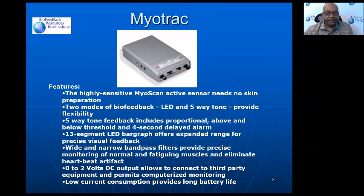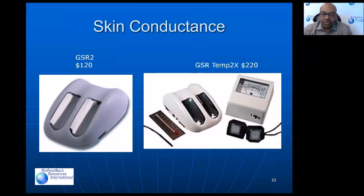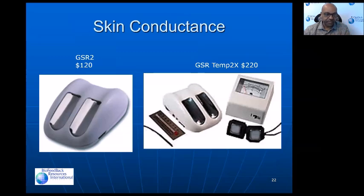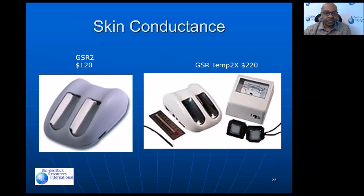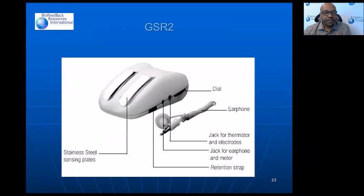For skin conductance, there are several devices available. One that's been around for a long time is the GSR-2 by Thought Technology. You put two fingers on the plates and it makes a sound — higher pitch when there's more sweat, lower pitch when there's less. There's also an add-on that allows you to do temperature and gives you an analog meter. The dial allows you to set your scale or threshold for the sound.